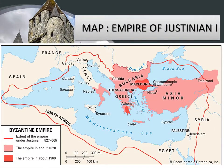You can have a look at the empire of Justinian I. The red outline which you can see marks the region taken over by Justinian I.